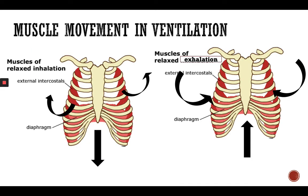Muscle movement and ventilation is really important. While we're breathing in and out, we use our muscles. When we breathe, there are two bands of muscles that cover our ribs: the external intercostal and internal intercostal muscles, and the diaphragm also takes action. During relaxed inhalation, the external intercostal muscles contract and expand, giving the lungs more room, while the diaphragm goes down and creates a cavity for the lungs to expand.